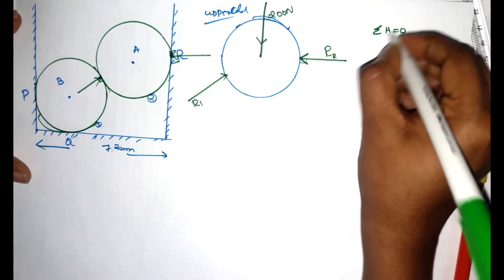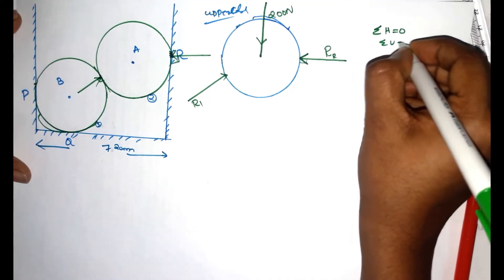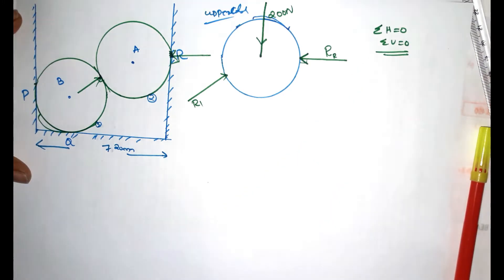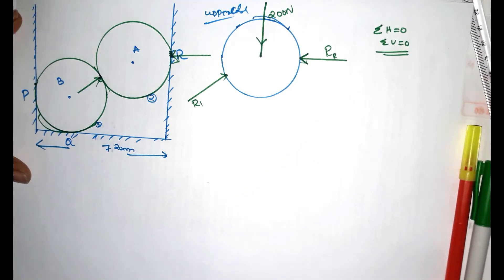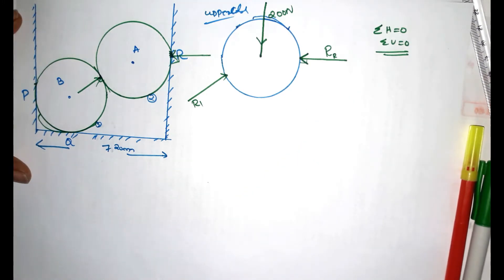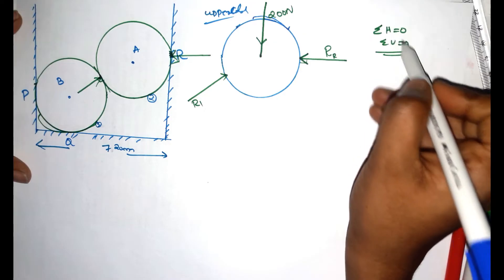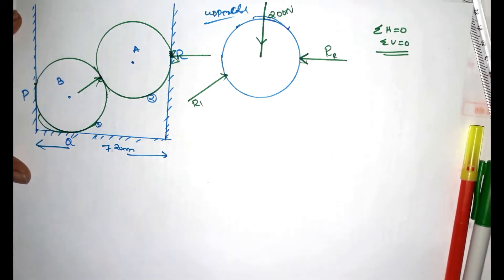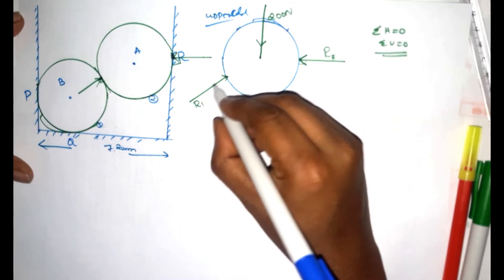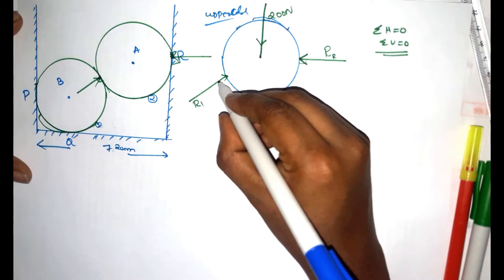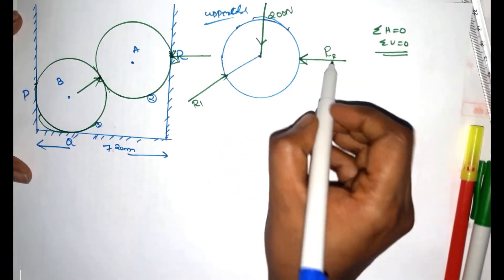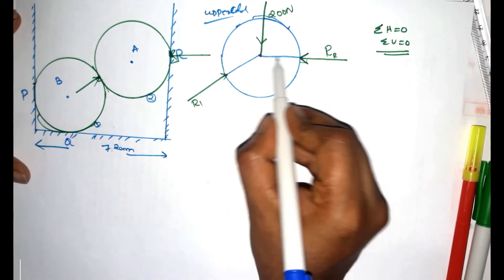Now we apply the equilibrium equations: Sigma X equals zero, Sigma V equals zero. We apply the horizontal forces and the vertical forces.